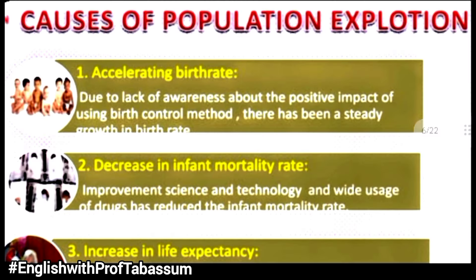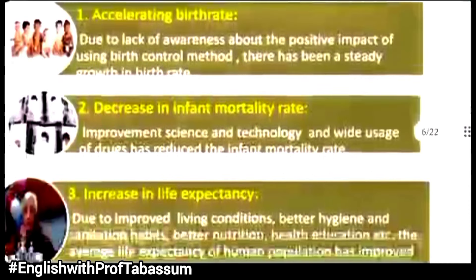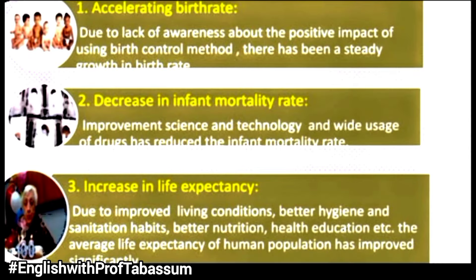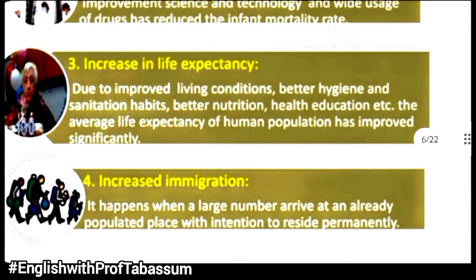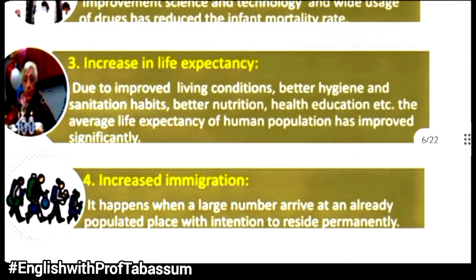Causes of population explosion — First: Accelerating birth rate. Due to lack of awareness about the positive impact of using birth control methods, there has been a steady growth in birth rate. Second: Decrease in infant mortality rate. Improvement in science and technology and wide usage of drugs has reduced the infant mortality rate. Third: Increase in life expectancy. Due to improved living conditions, better hygiene and sanitation habits, better nutrition, and health education, average life expectancy has improved significantly. Fourth: Increased immigration — it happens when a large number of people arrive at an already populated place with the intention to reside permanently.